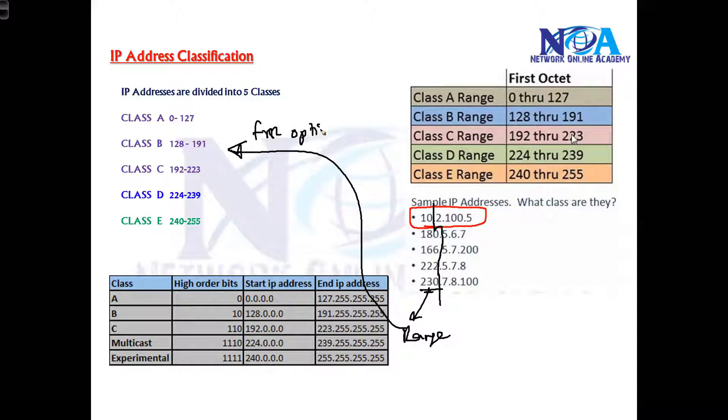Only see the first portion. Don't see the second, third, or fourth, because the second, third, fourth portions can be anything from 0 to 255. So the classes are not based on the second, third, or fourth octet.